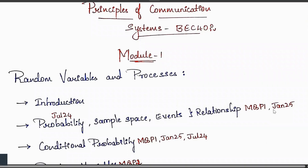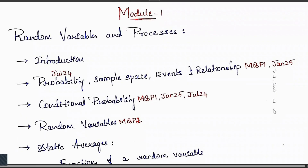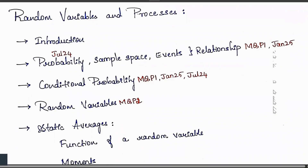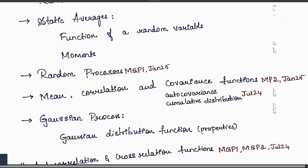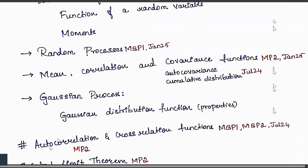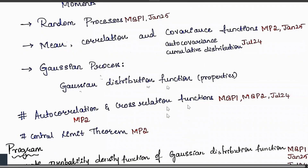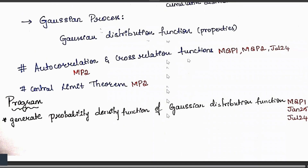So let's begin. Module 1 Part 1 covers: random variables and processes, probability, sample space and events, conditional probability (most important), random variables, statistical averages, function of a random variable, moments, random processes, mean, correlation and covariance functions, auto-covariance, auto-correlation and cross-correlation functions, Gaussian process with distribution function and properties, and the Central Limit Theorem. Importantly, the program for generating the probability density function of a Gaussian distribution has been asked in three papers — it is a very important, guaranteed question.